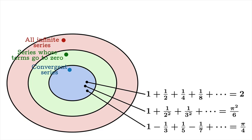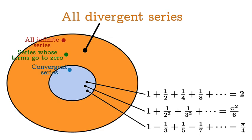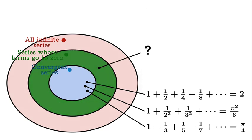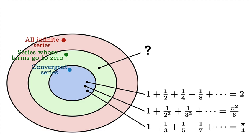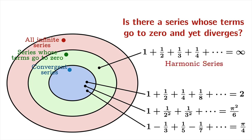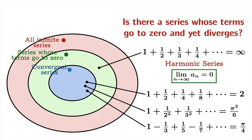Looking outside the set of convergent series means looking at divergent series. Is there anything living in the ring between the two sets? Such a series would have to diverge and yet have its sequence of terms go to 0. In a previous video we saw an example: the harmonic series. We proved the harmonic series diverges to infinity, yet the limiting value of its terms is 0. So the harmonic series lives in that ring.